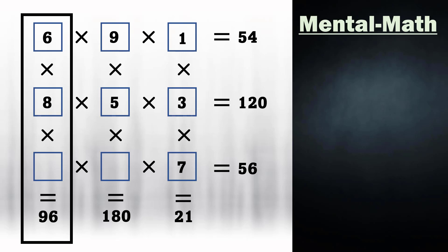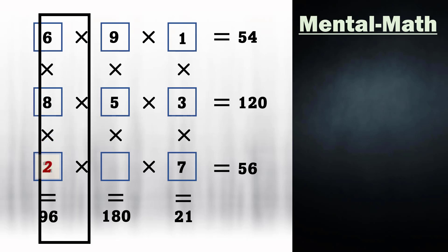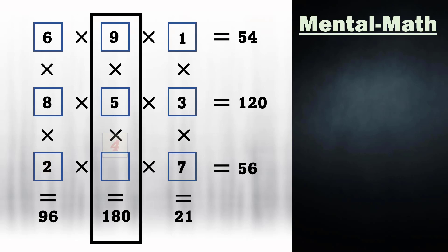Now 6 times 8 is 48. 48 times what number gives 96? It's simply 2. And here we have the remaining number 4.